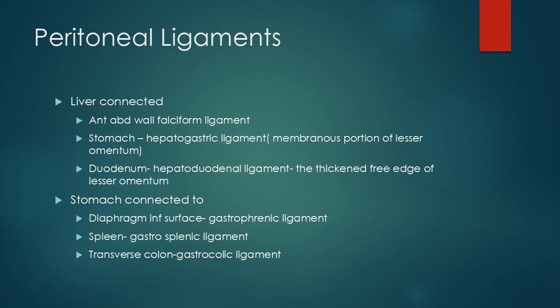Now we come to peritoneal ligaments. Peritoneal ligaments are peritoneal connections between two viscera. Taking the example of the liver: the liver is connected with the anterior abdominal wall by a ligament known as the falciform ligament. The lower edge of the falciform ligament has got the ligamentum teres, which is the obliterated umbilical vein.